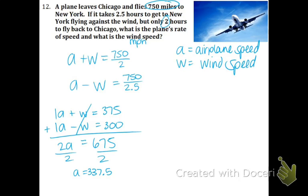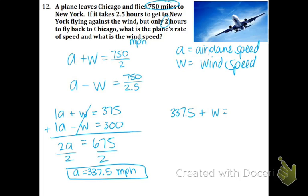That is the speed of the airplane. Now to find the wind speed, plug it in for either equation — I prefer the top. So 337.5 plus W equals 375. Subtract this number from both sides and you get W equals 37.5 miles per hour.